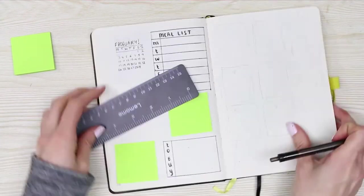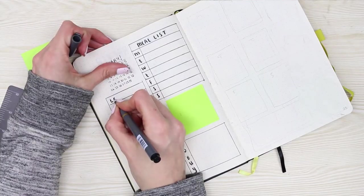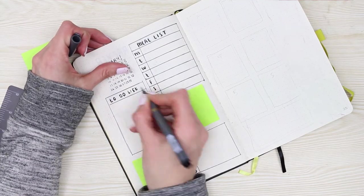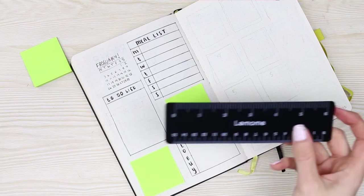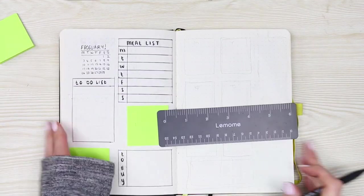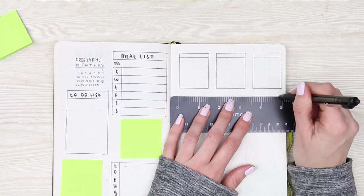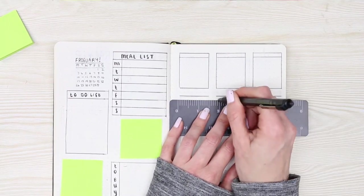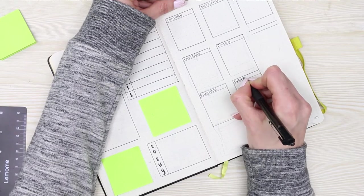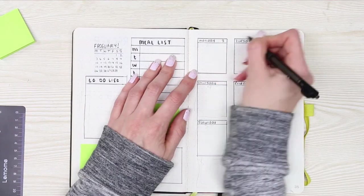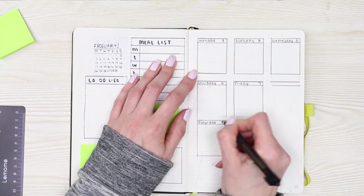I then moved on and drew the little calendar up at the top. I've also got a 'to buy' list at the bottom and then a to-do list as well. So I can flick to any week in my bullet journal and just write down things that I want to do for that week, but not necessarily put it on a certain day.